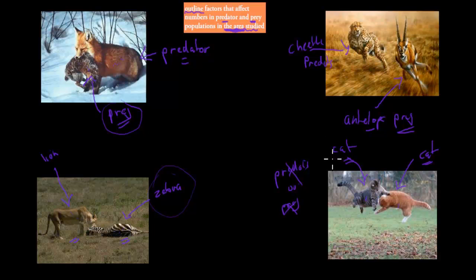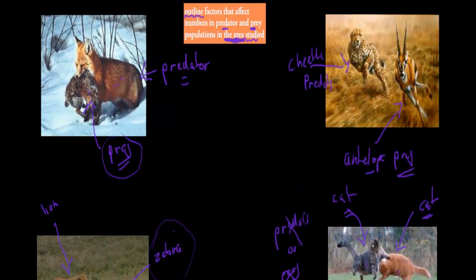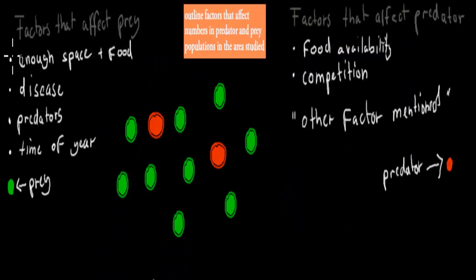Overall, the idea between predators and prey is that one is eating the other for its food — not just killing it, but killing it for food. The dot point says: outline factors that affect the numbers in predator and prey populations in the area studied.